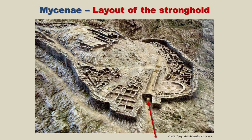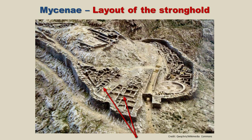Here is the Lion Gate, and after you entered that you would come across Grave Shaft A. Just past that are residential homes that were built — it's important to note that these were not originally within the walls; later the walls were extended to include these two areas. Right here housed the garrison and guard quarters, and on top of this hill is the main palace, which in classical Greek times would have been called the Acropolis. This path leads to more buildings behind the palace, a cistern which held water, and another gate.